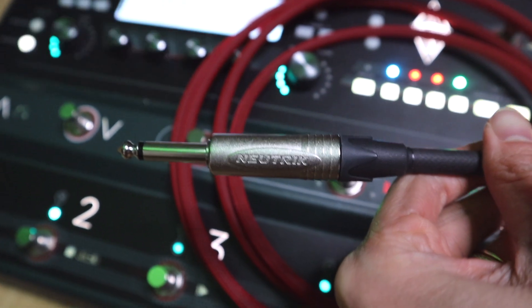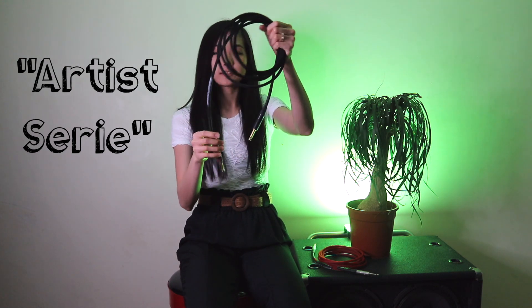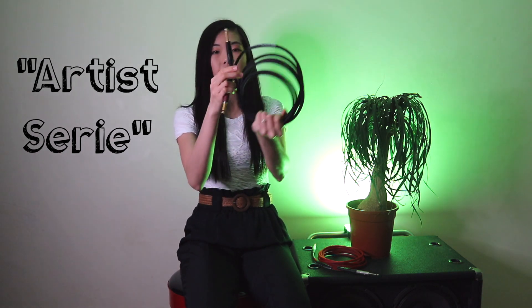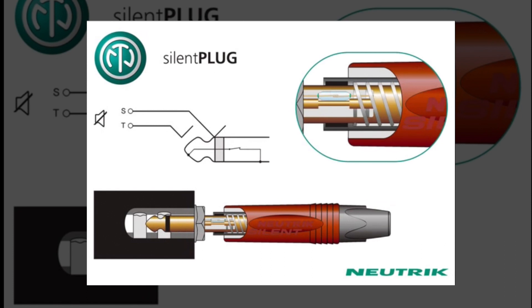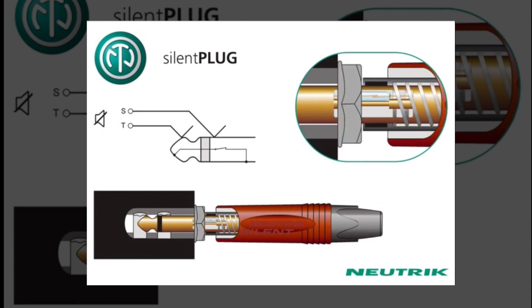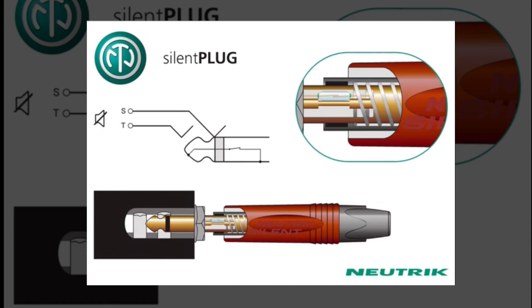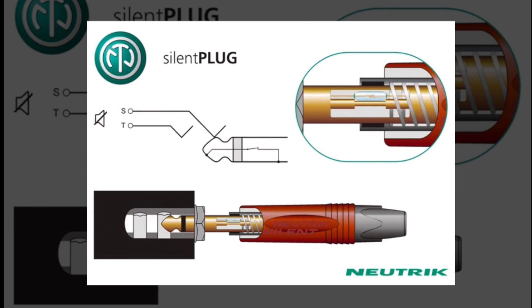The next thing to look at is the plug. Spinal Cord uses Neutrik, which is a very familiar name in the gear industry. The latest product release from Spinal Cord is the Artist Siri — this black cable right here. The Artist Siri is a silent plug that automatically mutes an instrument cable to avoid pops and squeals when unplugged or when changing instruments.